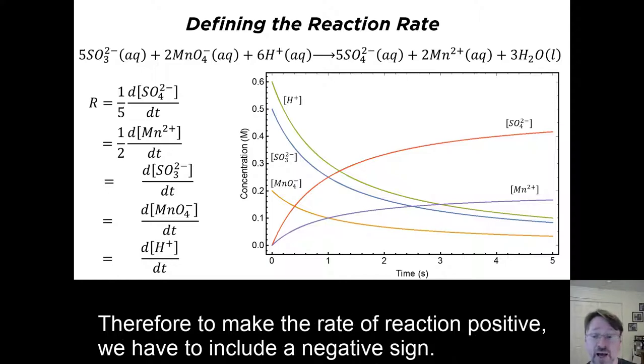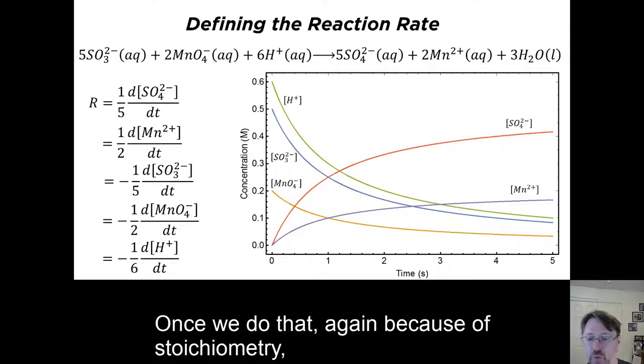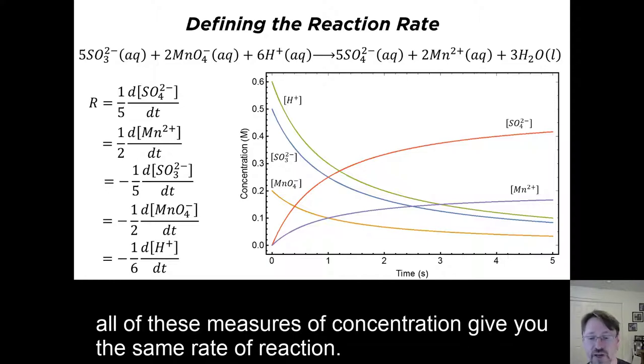Therefore, to make the rate of reaction positive, we have to include a negative sign. Once we do that, again because of stoichiometry, all of these measures of concentration give you the same rate of reaction.